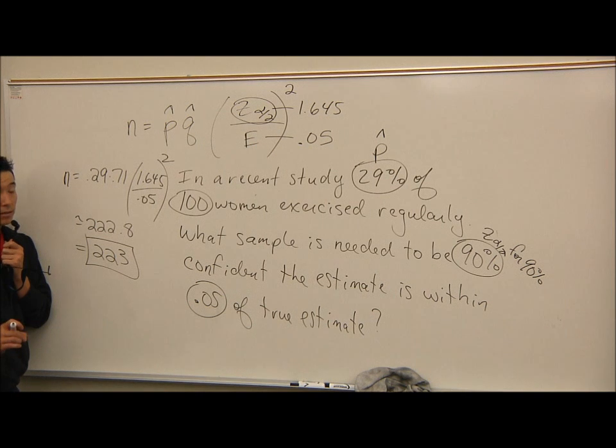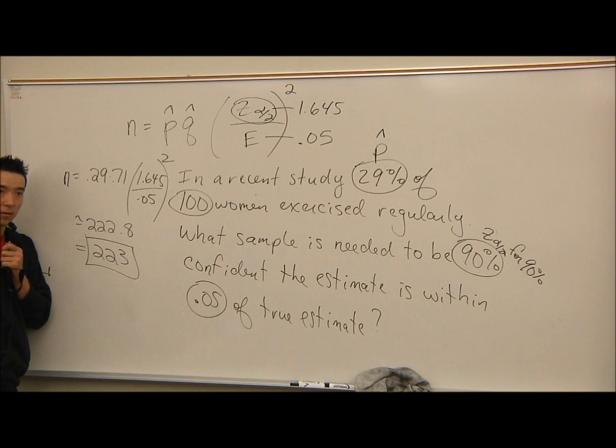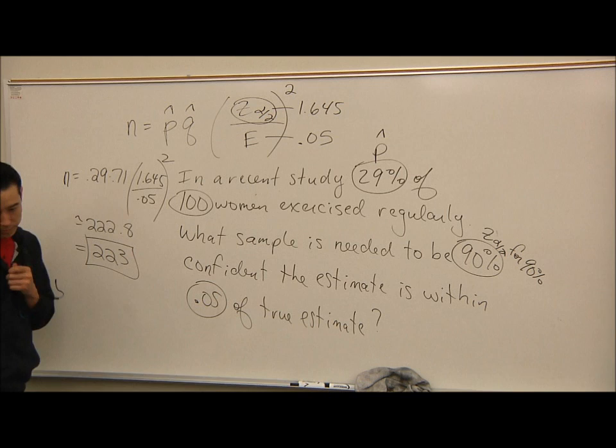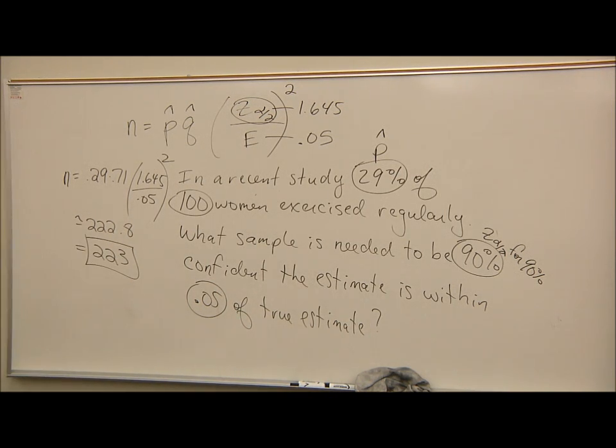So we did two things today. We did a confidence interval for a proportion, which is that long formula, and then a minimum sample size needed for an interval estimate for a proportion. You have one for the mean two lectures ago, and this one's for a proportion. Any questions on that? Make sure to have them in your notes.